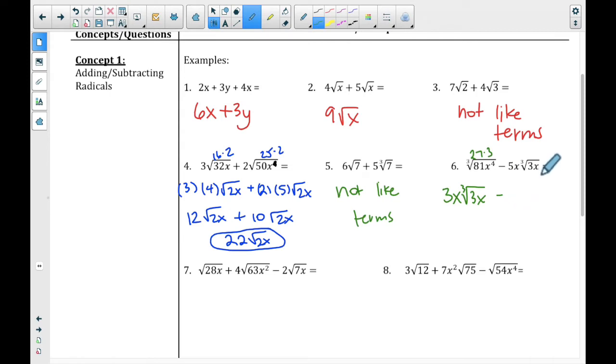Then we have 5x, so we're going to keep that cube root of, that doesn't change, right? So we have 5x cube root of 3x. So now we have like terms. 3x minus 5x is a negative 2x, and then we have our cube root of 3x. And so that's our final answer.